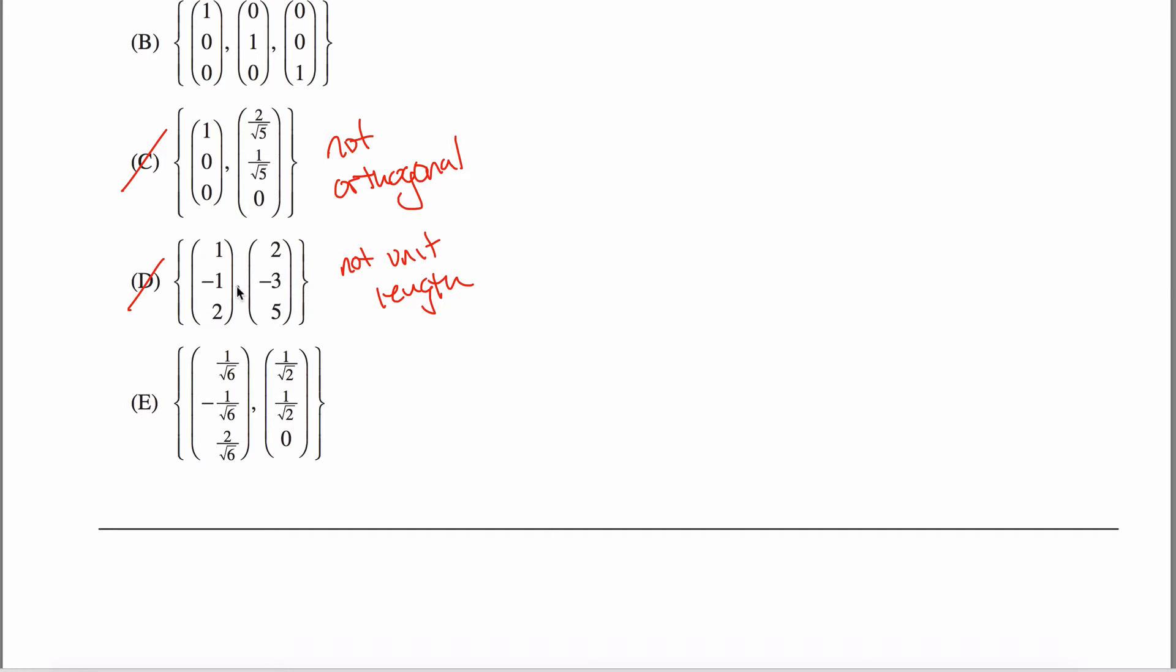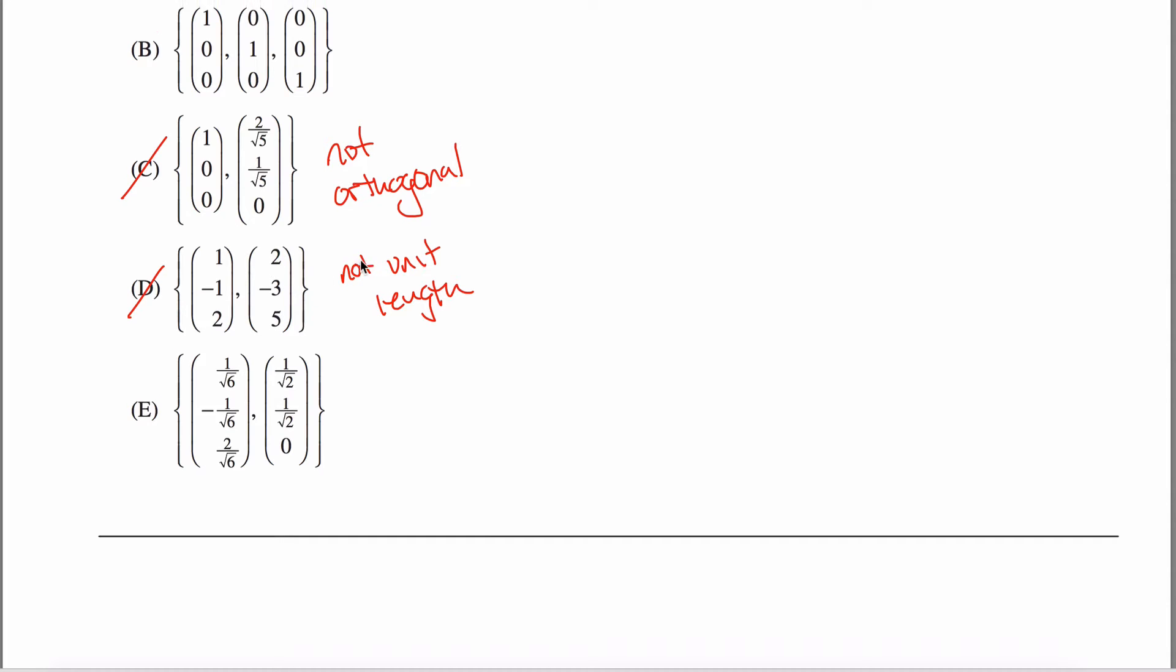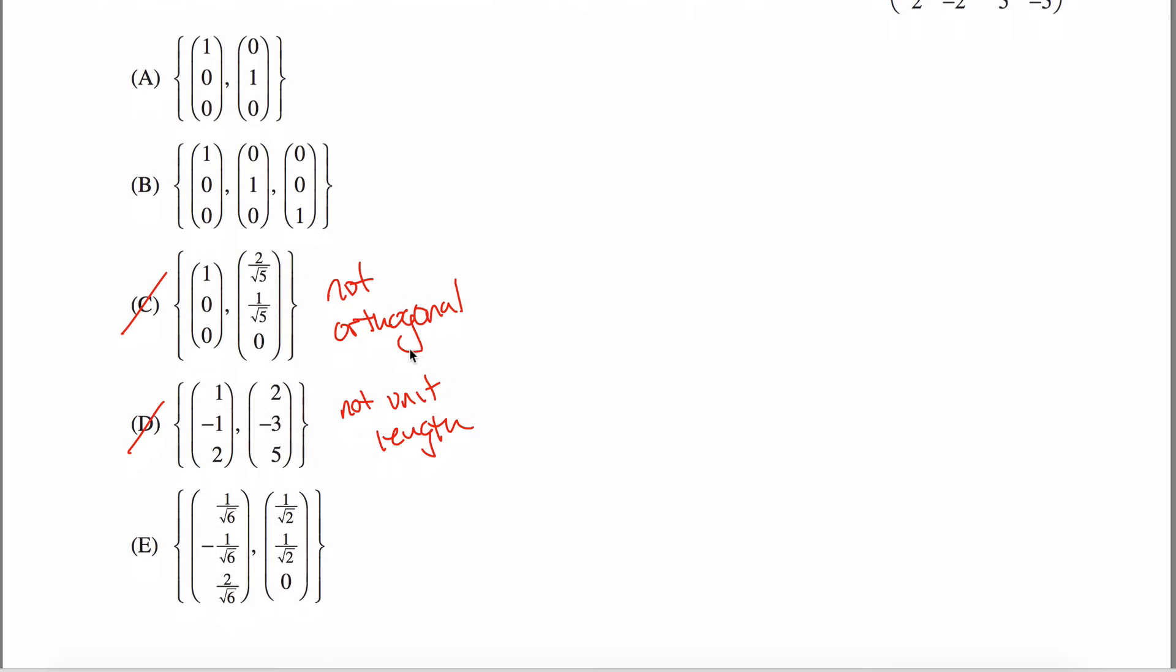Because one squared plus negative one squared plus two squared, the square root of that is not one. What is it? I don't know, I don't care, it's not one. Neither is this length one. So that can't possibly be my answer. So I've moved it down to three. I guess that helps a little bit.